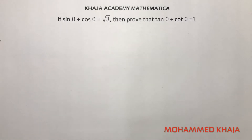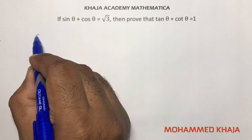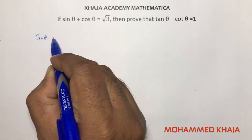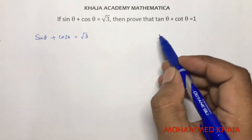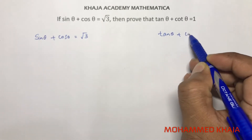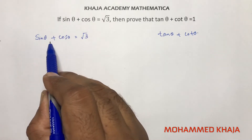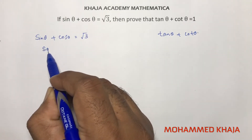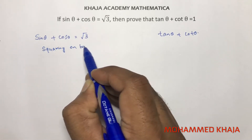If sine theta plus cos theta equals root 3, then prove that tan theta plus cot theta equals 1. Here, sine theta plus cos theta equals root 3, and we need to prove that tan theta plus cot theta is 1.